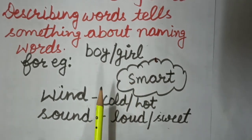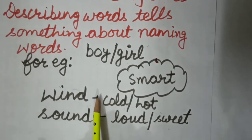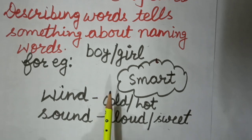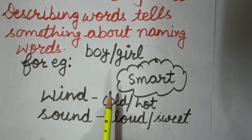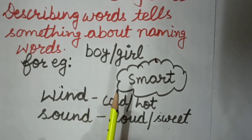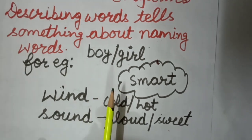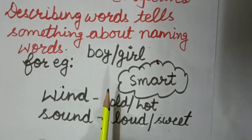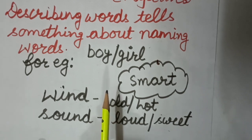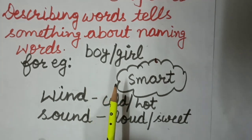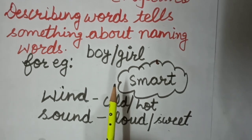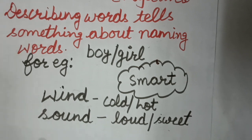This topic is from your lesson 2. I have covered this topic from your book exercise of lesson 2, which we discussed in the previous lecture. You have to do this topic in the book only. I am also giving you an assignment on describing words for your practice.